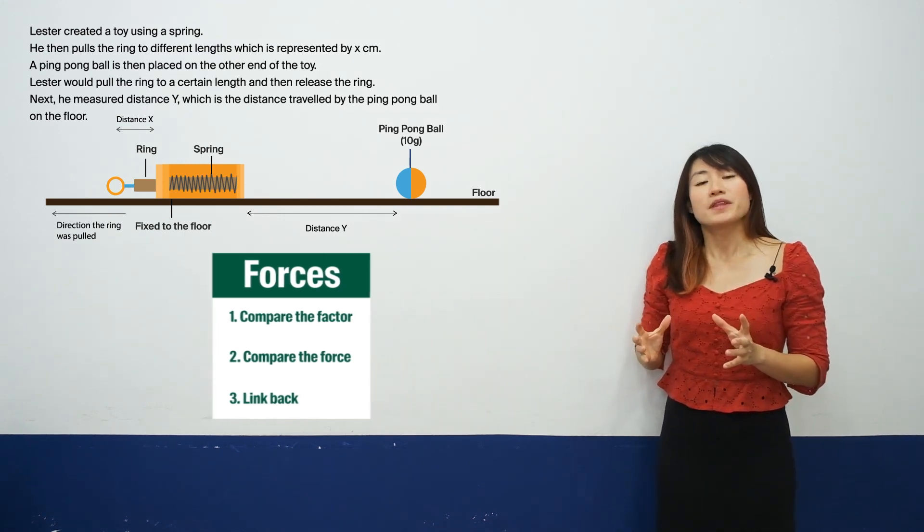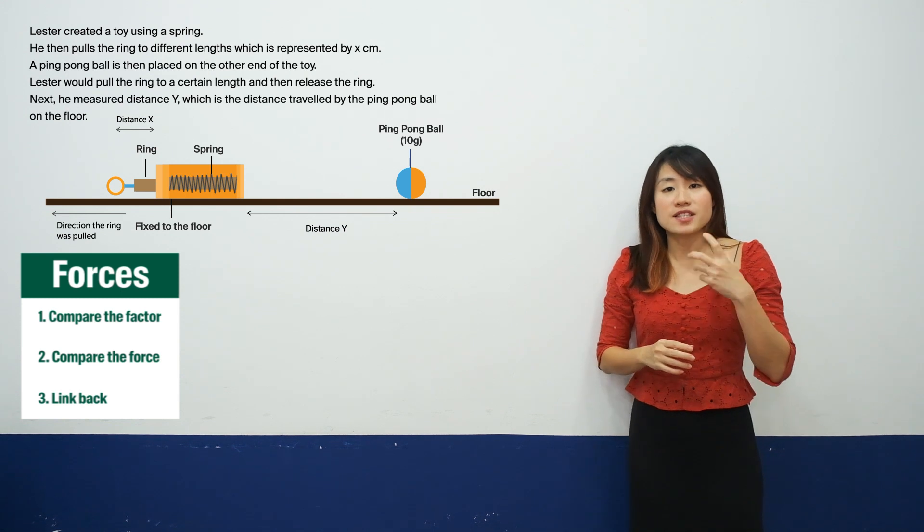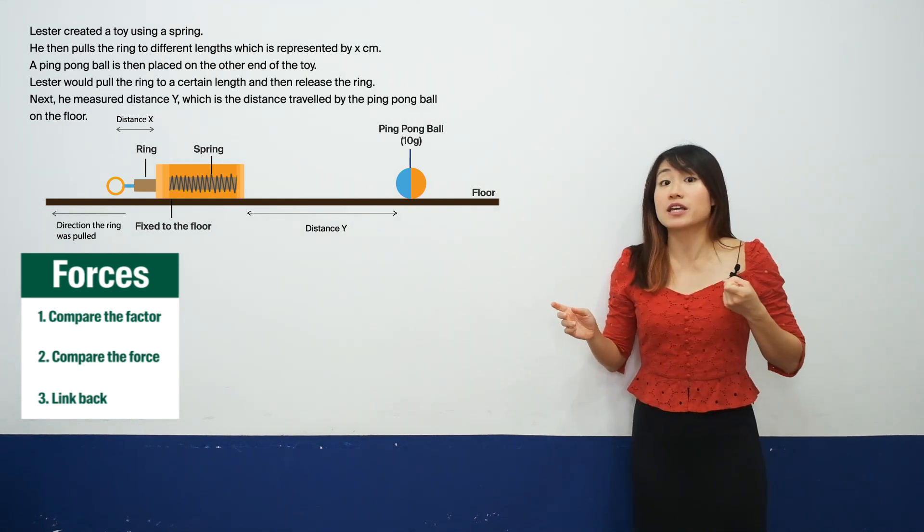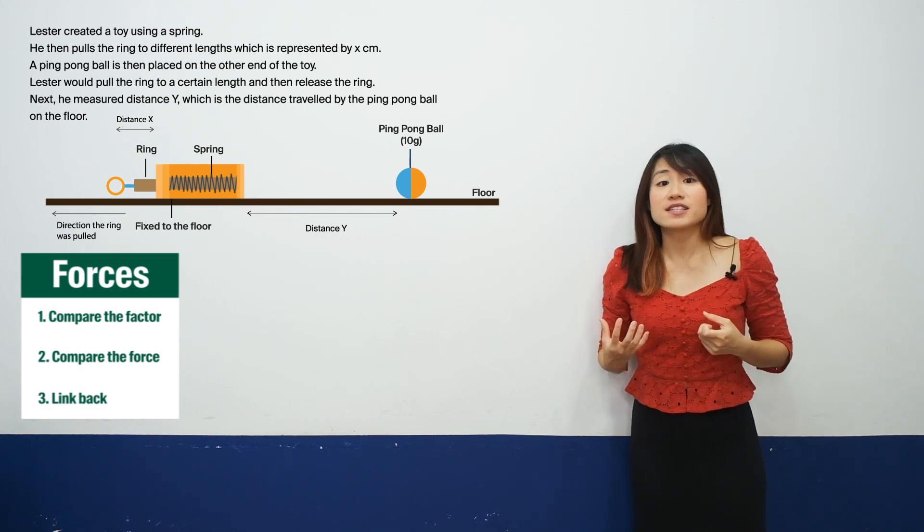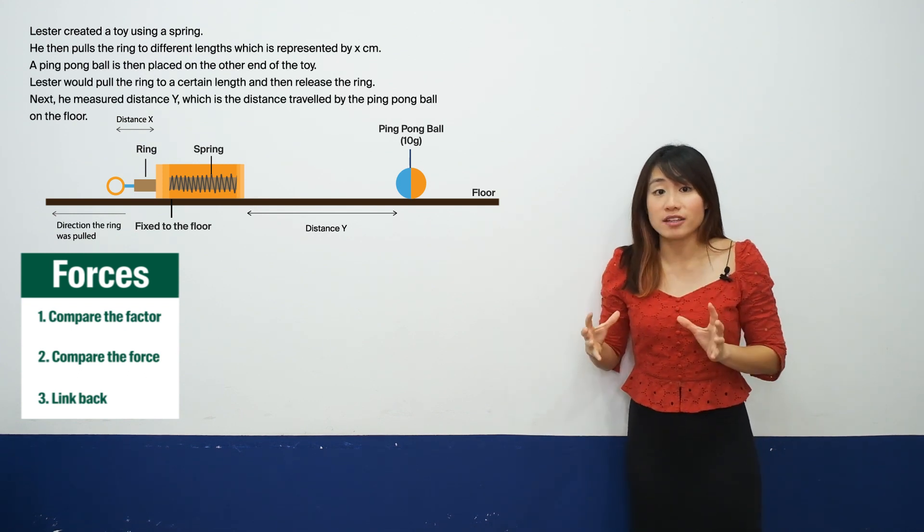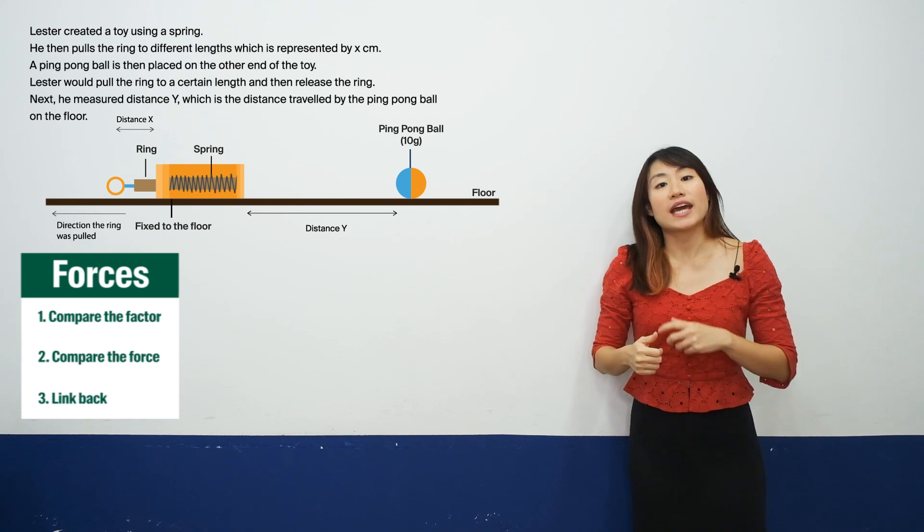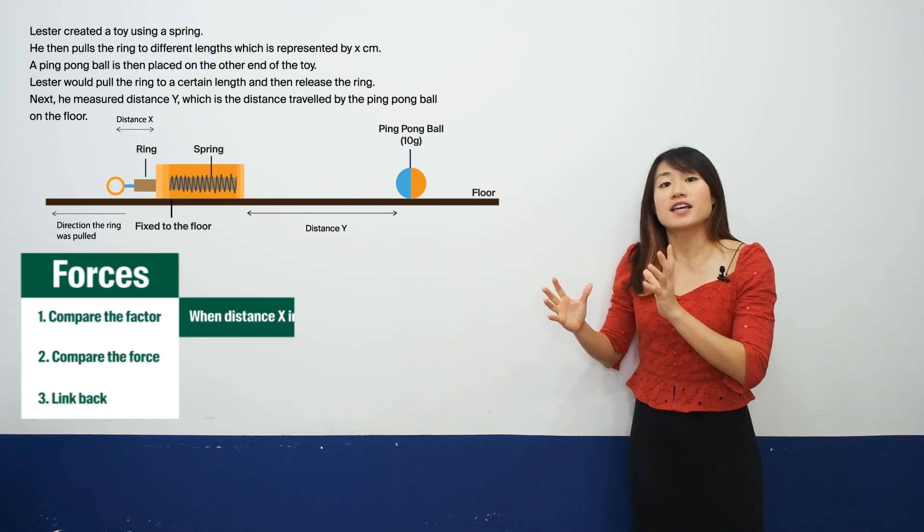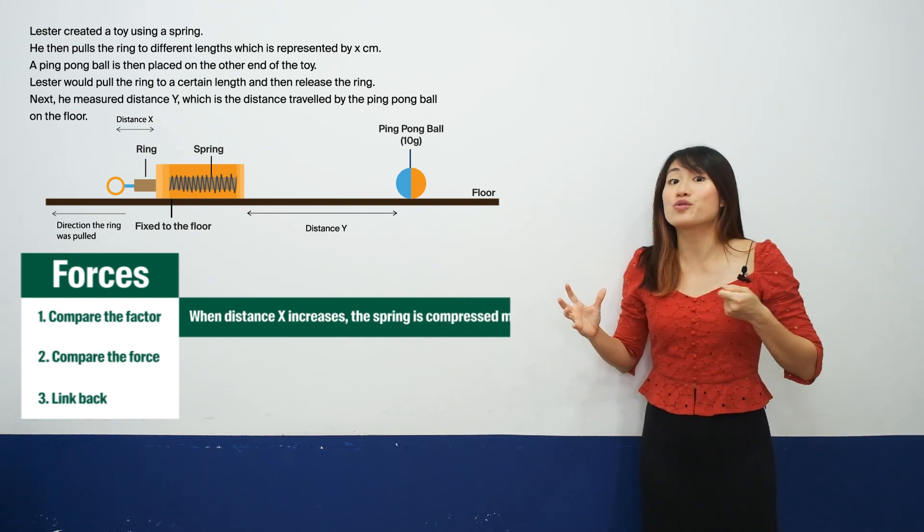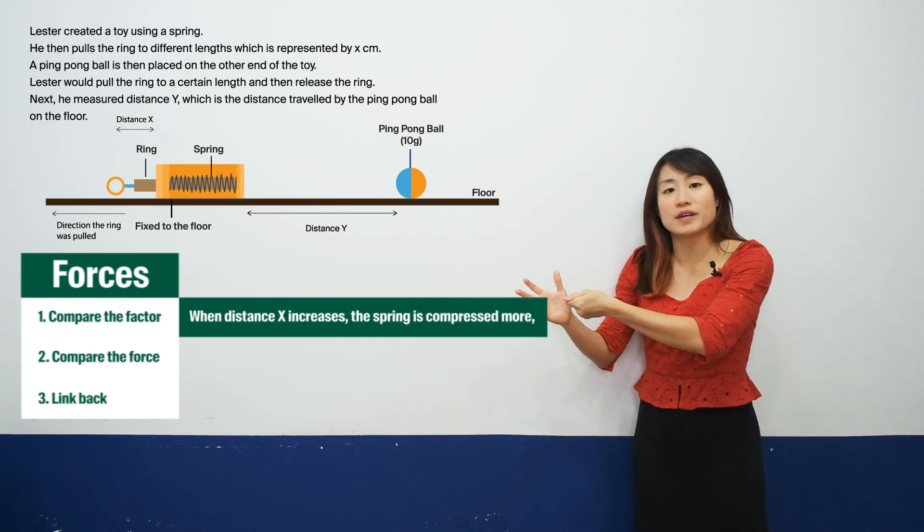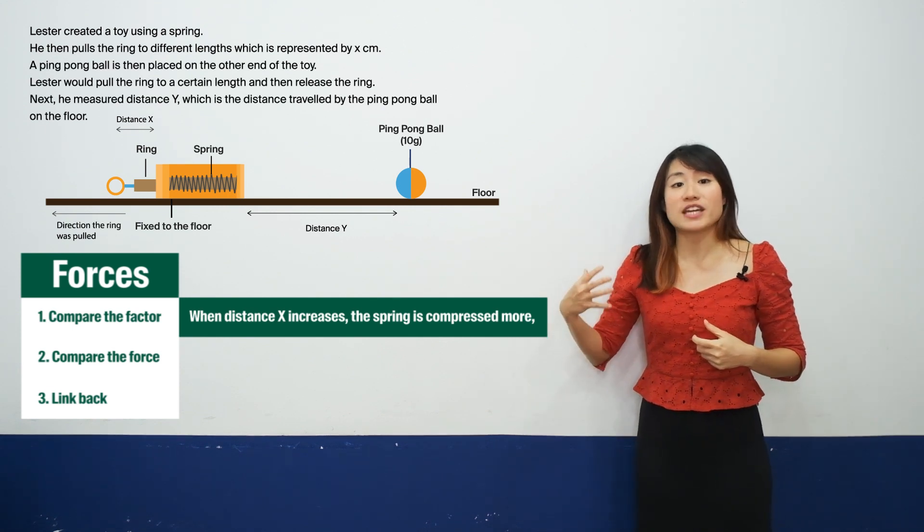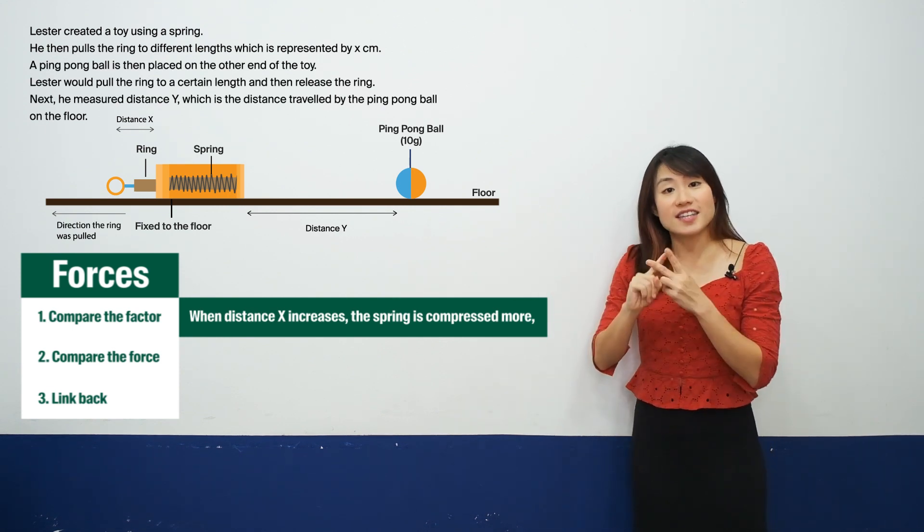So what is the factor here? The factor is simply stating what happened to the spring when the ring is being pulled. So in this case, when we talk about comparing the factor which is the first step, we know that the spring compresses. But the difference here is as distance X increases, which means the ring is being pulled further and further back, what happened is the spring is compressed more.